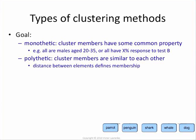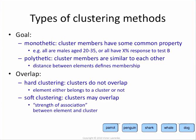You can have monothetic clusters or polythetic clusters. Monothetic clusters — they all have some property. Polythetic clusters, the stuff in the cluster, everything is similar to each other, but there isn't a single property that makes them all similar. So it's really the similarity or the distance that defines membership, not any particular attribute value.